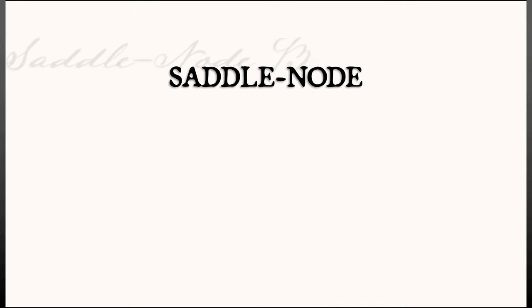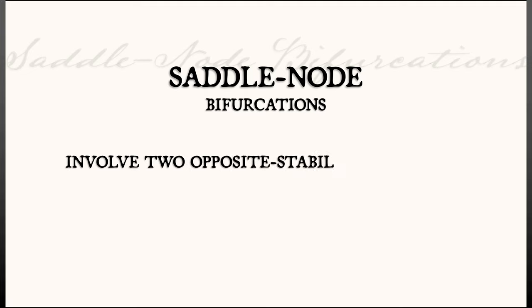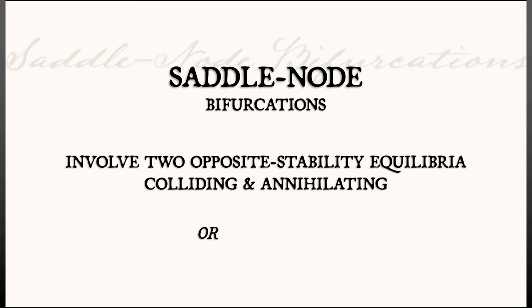The thing to remember about saddle node bifurcations, besides the normal form, which you really ought to memorize, is that you have two opposite stability equilibria that collide and annihilate or the reverse.